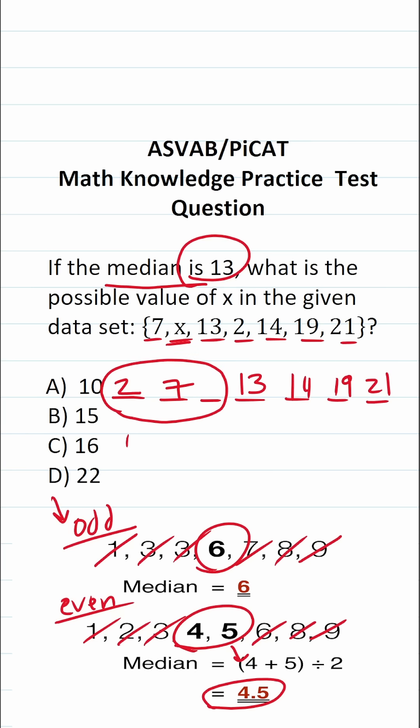So that means that our value of x has to be on this side of the data set. That is to say, it could be between one to 13. And if we look at our answer choices, the only value that is between one and 13 is 10. And we can actually plug that in right there. So the only possible value of x in our data set, given our answer choice, is 10.